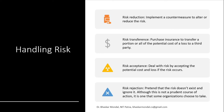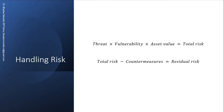Then there is risk rejection — that means you pretend that the risk does not exist and ignore it. Although this is not a prudent course of action, it is one that some organizations choose to take. You are just pretending there is no risk, but also doing some preventive measures in the background. Handling risk can be seen in terms of value: threat multiplied by vulnerability multiplied by asset value, minus countermeasures, equals residual risk.